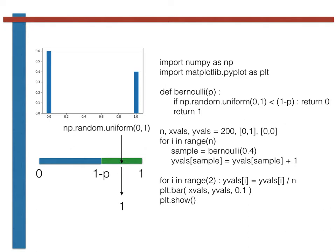In the code on the right-hand slide, we test whether or not our random variable falls in the blue region of the line by using an if statement.